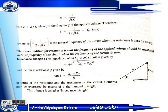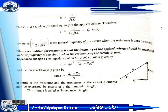Now, the impedance triangle: the impedance of the LCR circuit is given by Z equals root over R squared plus (XL minus XC) squared. The phase relationship is given by tan phi equals (XL minus XC) by R. The resistance and reactance of circuit elements can be expressed by means of this triangle, which is called the impedance triangle. This is a very important concept.